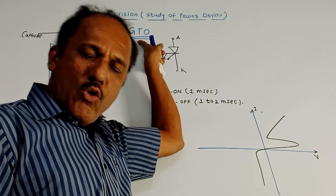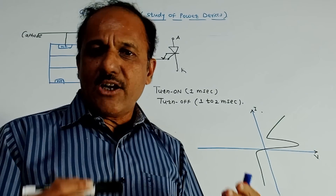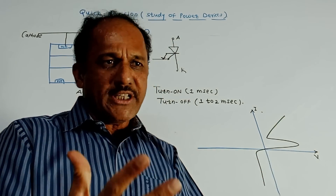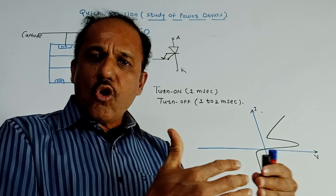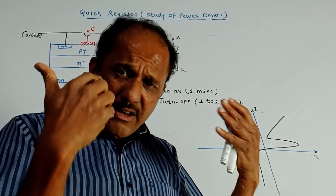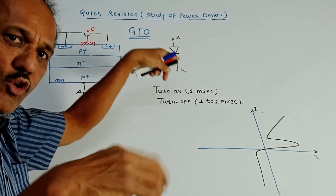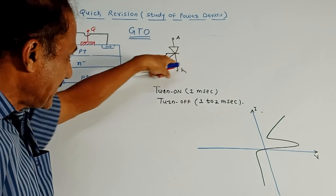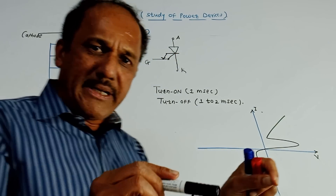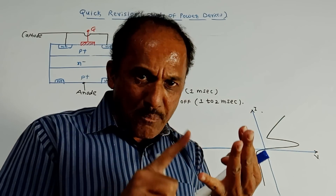Next is GTO — Gate Turn-Off Thyristor. It is almost the same as SCR or thyristor, with slight differences. Commutation means switching off the SCR. One technique is natural commutation, where SCR switches off naturally. Another is forced commutation, which is used in the case of GTO. This is the symbol, which shows an extra connection compared to SCR.